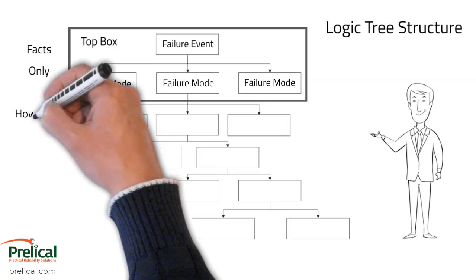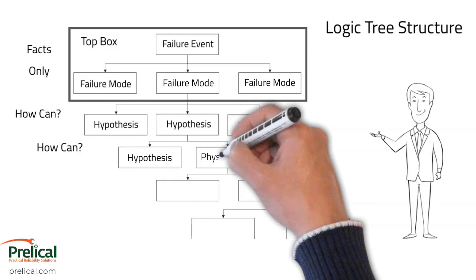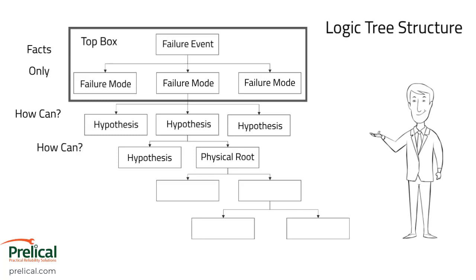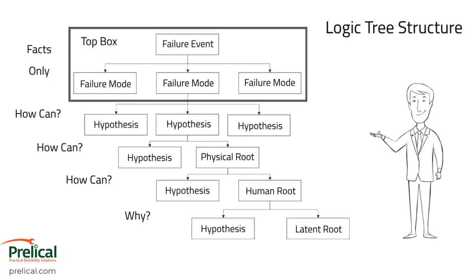Once you fully develop your top box, the next step is to begin to hypothesize. We do that by asking a series of 'how can' questions: how can the previous failure mode or hypothesis have occurred? We continue that 'how can' questioning as we work through the different levels of the logic tree, arriving at different levels of root causes.